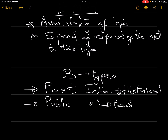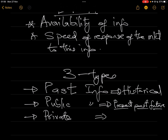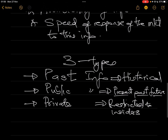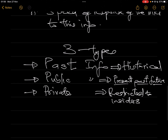The second type is public information — information that is available to everybody. It's publicly available and it can be past, present, or future. The third type is private information, which is not available to everybody; it is restricted information. It is restricted to insiders only — meaning only directors, management, or staff probably know about this particular type of information. So these are the three types of information.